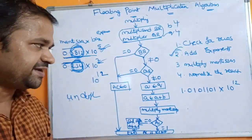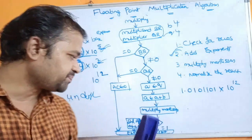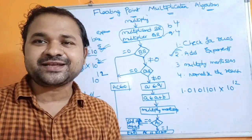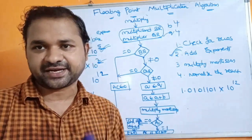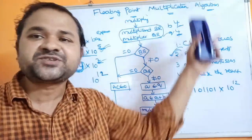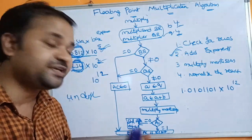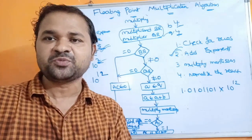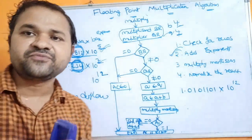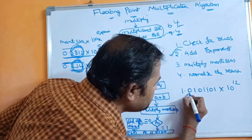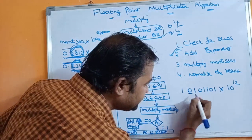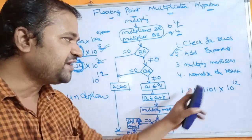The last step is to normalize the result. After multiplication, overflow should not occur because if the multiplicand is 4 bits and the multiplier is 4 bits, the AC register can store all 8 result bits. However, there is a possibility of underflow. If the most significant digit of the mantissa is 0, there is an underflow and we need to normalize.